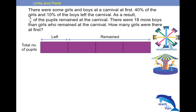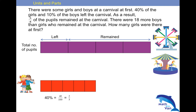For the girls, we are told that 40% of the girls left. So what is 40% as a fraction? Reduced to simplest form, it would be 2 over 5. So 2 fifths of the girls left. Looking at the denominator, you will know that you use 5 units. So let's draw 5 units to represent the girls.